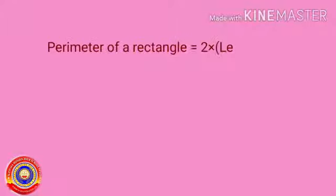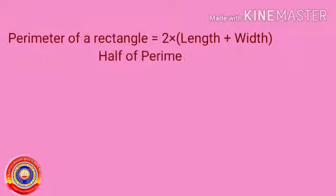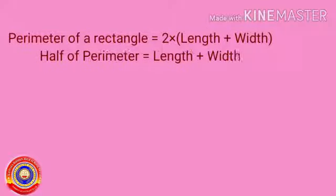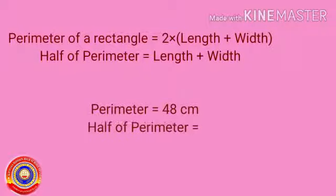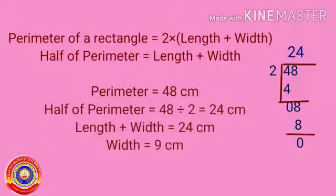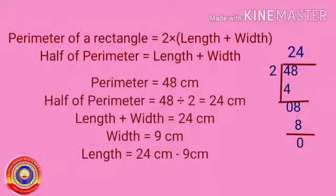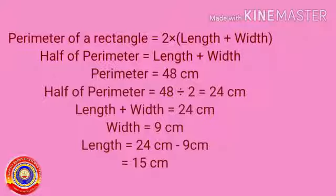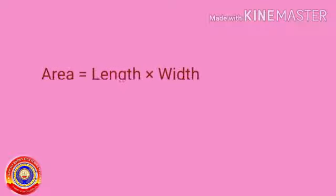Perimeter of a rectangle is equal to 2 into (length plus width), so half of perimeter is equal to length plus width. Here the perimeter is given as 48 centimeters, so half of perimeter is equal to 48 divided by 2, which is equal to 24 centimeters. Then length plus width equals 24 centimeters. Since width is given as 9 centimeters, length is equal to 24 minus 9, which is equal to 15 centimeters.